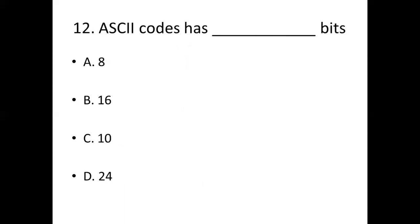Twelfth bit: ASCII code has how many bits? Option A: 8. Option B: 16. Option C: 10. Option D: 24. Answer: Option A — 8.